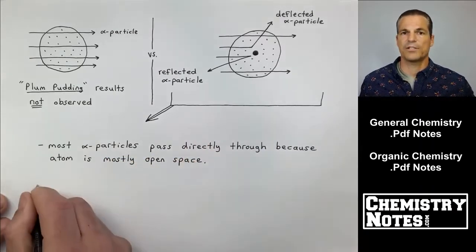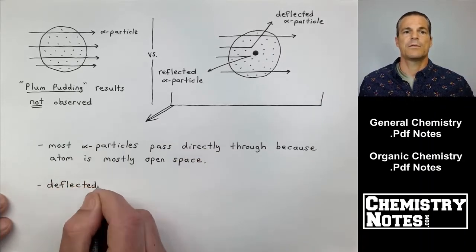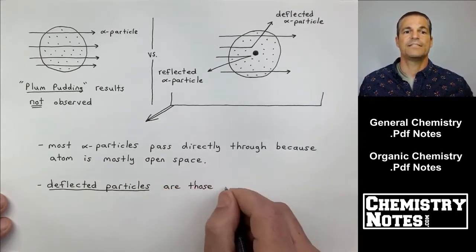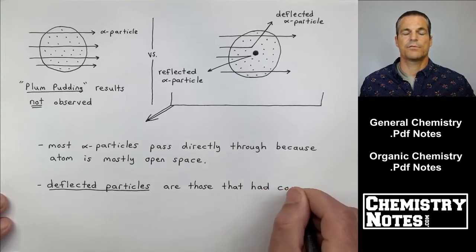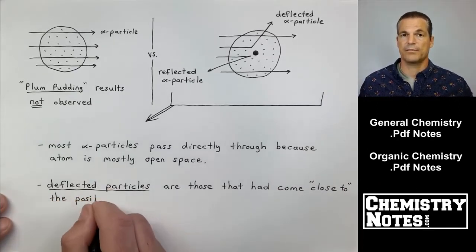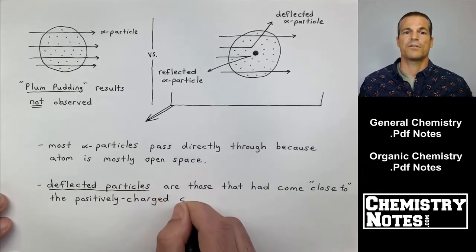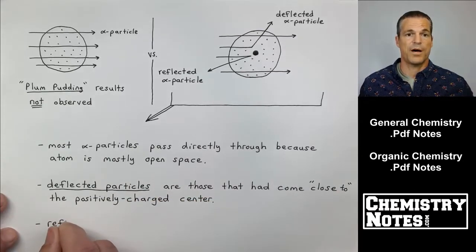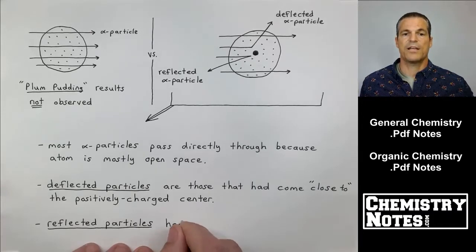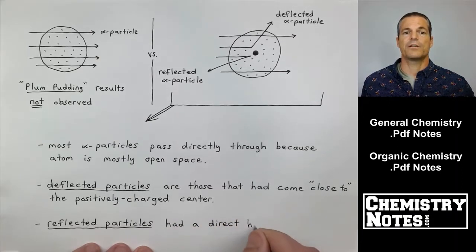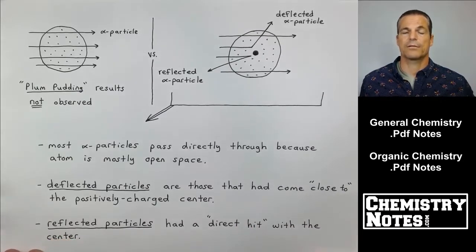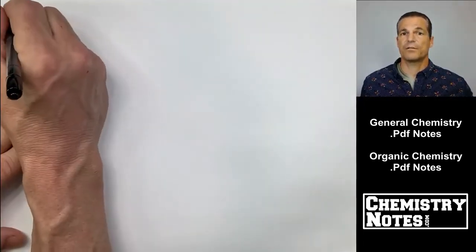Let's make a bullet point there and summarize what we've seen on the right-hand side. Most alpha particles pass directly through because the atom is mostly open space. Deflected particles and reflected particles, you can see an example on the sketch on the right-hand side. Deflected particles are those that had come close to the positively charged center and then deflected away. Reflected particles had a direct hit with this positively charged center and then they rebounded or reflected directly back. Rutherford has just discovered the nucleus.